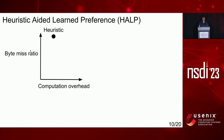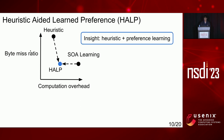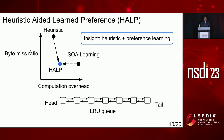Heuristic algorithms have low computation overhead but high byte miss ratio, while state-of-the-art learning algorithms have low byte miss ratio but high computation overhead. We ask the question: can we combine the best of both worlds? This is exactly the insight of HELP — combining heuristic with preference learning. We observe that many objects can be easily filtered out from eviction candidates without the need for ML. Using LRU as an example, objects near the LRU head just received recent access and are therefore less likely to be good eviction candidates, as opposed to objects near the tail.